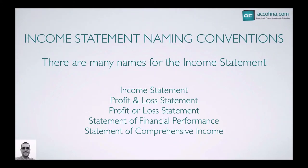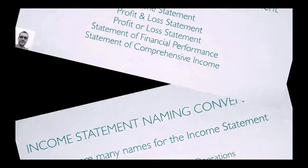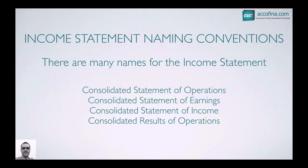Here are some of the main names you'll come across: the income statement, the profit and loss statement, the profit or loss statement, the statement of financial performance, and the statement of comprehensive income. Some of these names are used by large corporate groups, such as consolidated statement of operations, consolidated statement of earnings, consolidated statement of income, or consolidated results of operations.